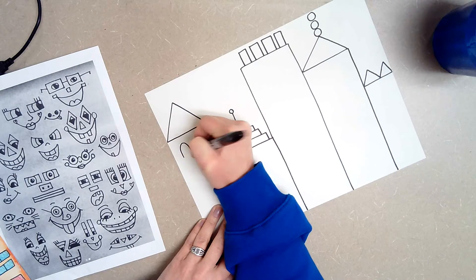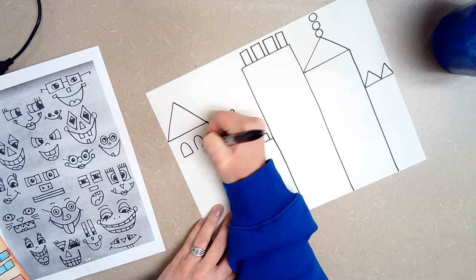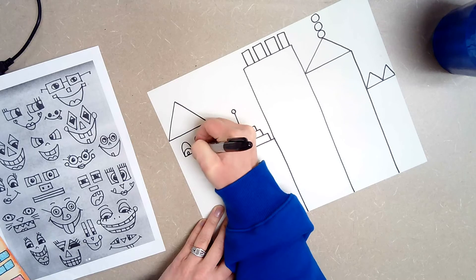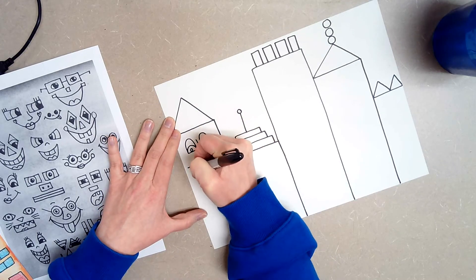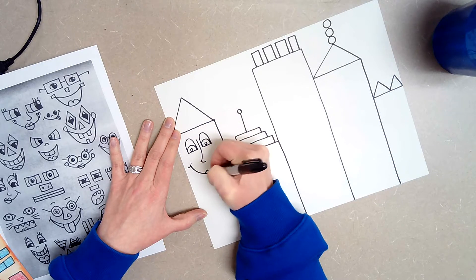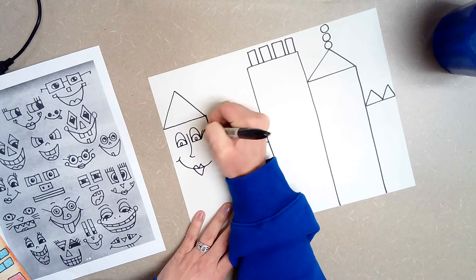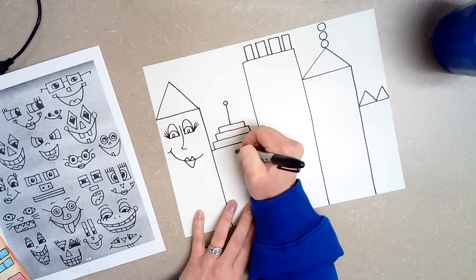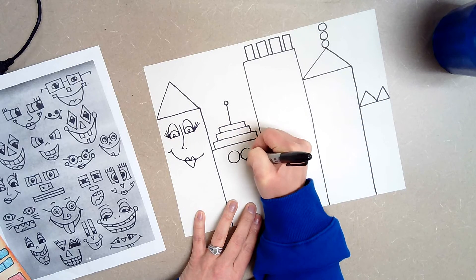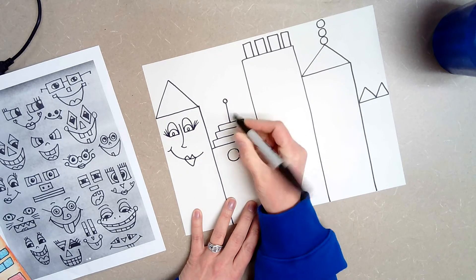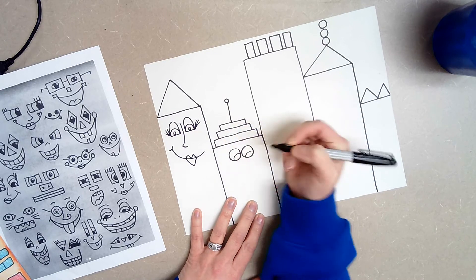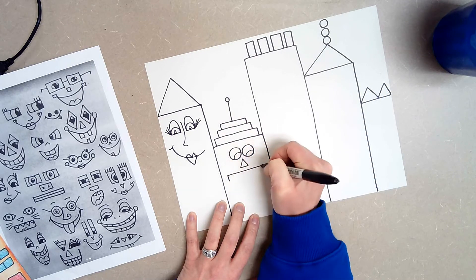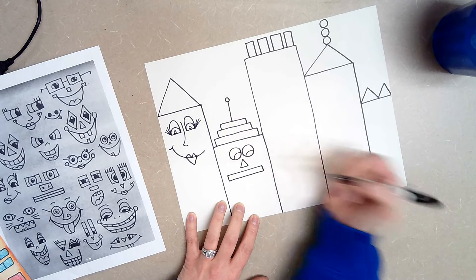So I am just going to go ahead and start adding in some of those silly eyes, noses and mouths. If you want to go in and add like eyelashes that is always fun. Smaller details like that. Maybe this one is going to have circle eyes looking off to the side. Maybe a triangle nose and triangle mouth.